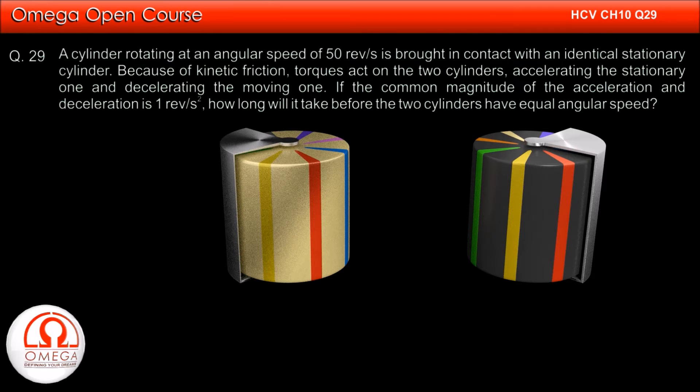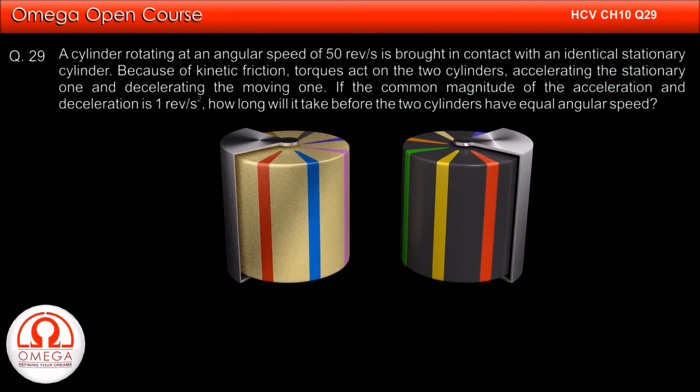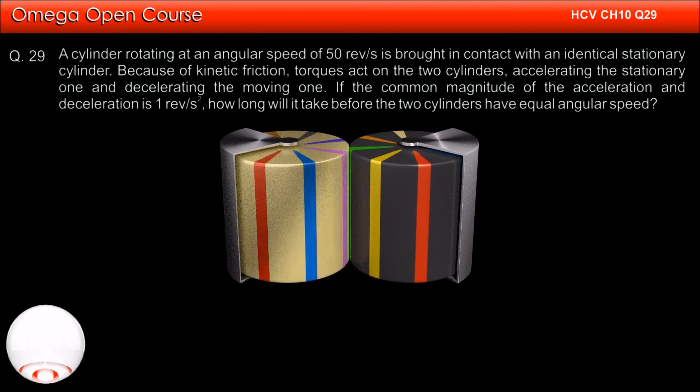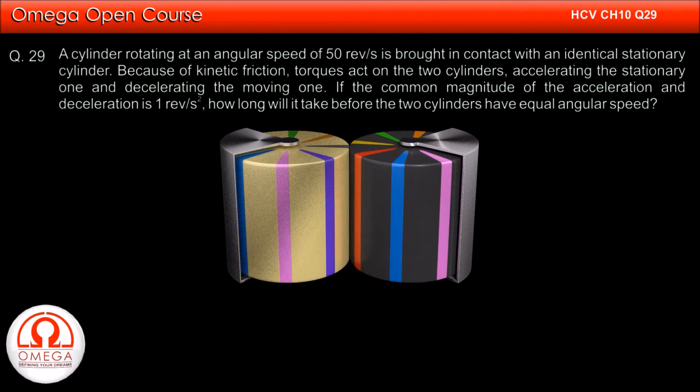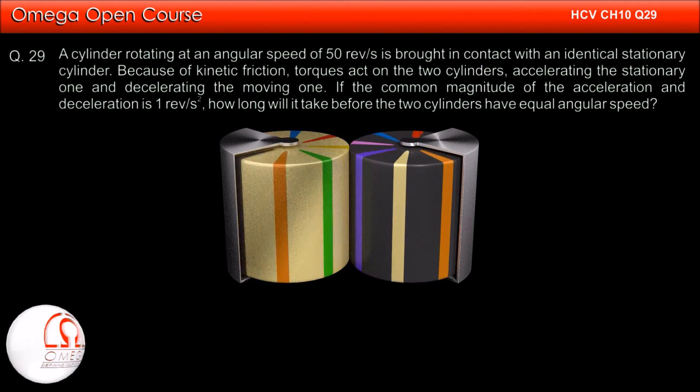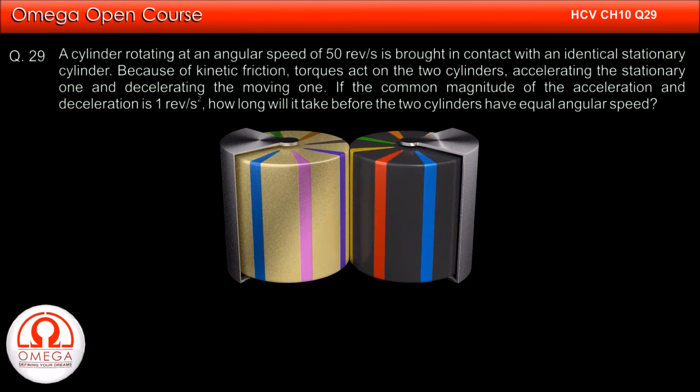A cylinder rotating at an angular speed of 50 revolutions per second is brought in contact with an identical stationary cylinder. Because of the kinetic friction, torque acts on the two cylinders, accelerating the stationary one and decelerating the moving one.